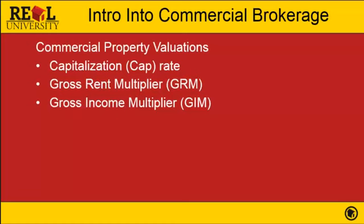You've got to remember: gross rent multiplier and gross income multiplier are before expenses. The equation to keep in mind is: gross rent minus expenses equals net rent; minus debt service — which is the mortgage payment — equals your cash flow. The cap rate uses your net operating income, whereas the GRM and GIM use gross operating income. The capitalization rate and gross income multiplier are annual, while the gross rent multiplier is a monthly ratio.